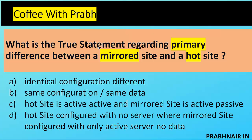Next coffee shot: what is the true statement regarding the primary difference between the mirror site and hot site? Option A: identical configuration, different data — definitely in a mirror site we have people, process, technology, and updated data; in a hot site we have people, process, technology, and a server but no data. So A makes more sense. Option B: same configuration, same data — not true because mirror is active-active and hot site is active-passive.